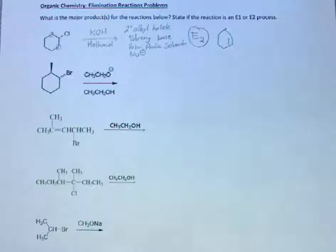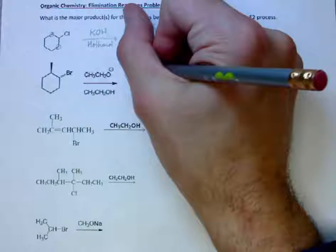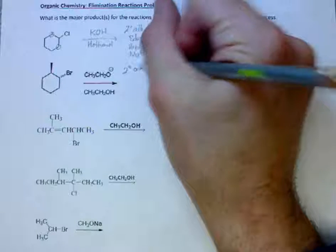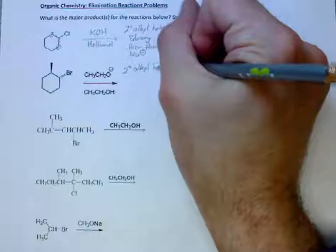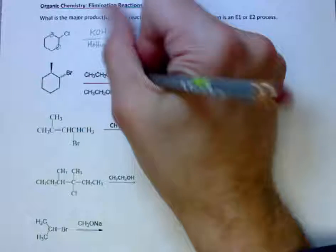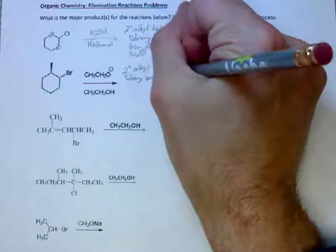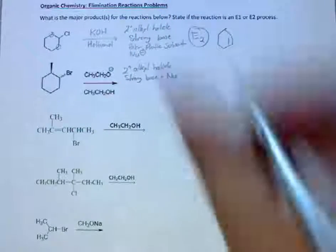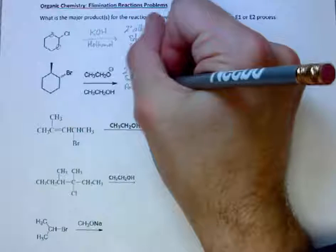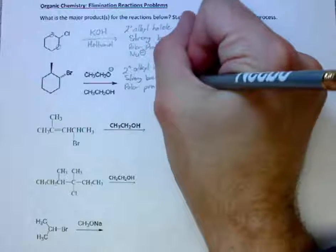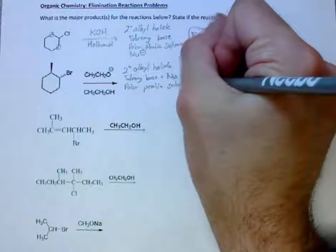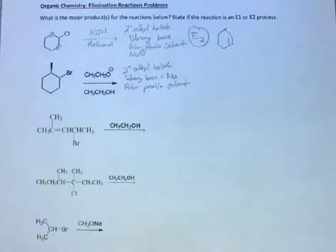For the next one we have a secondary alkyl halide, a strong base, and a strong nucleophile. We are in a polar protic solvent so this will also be an E2 process.